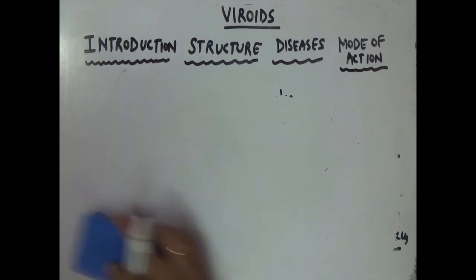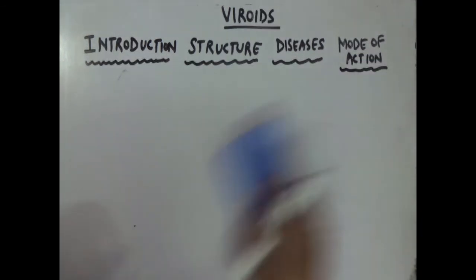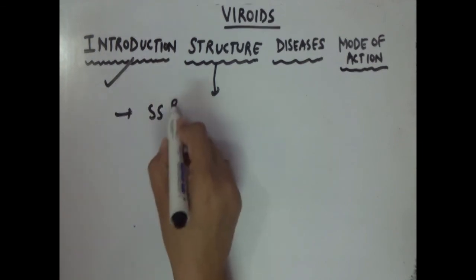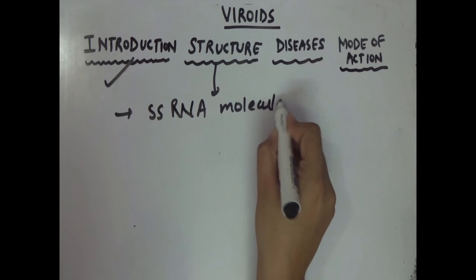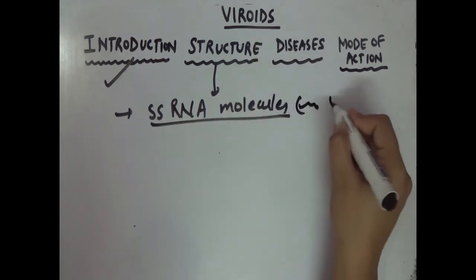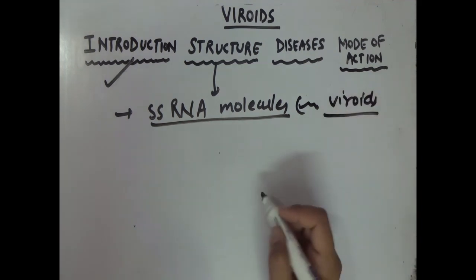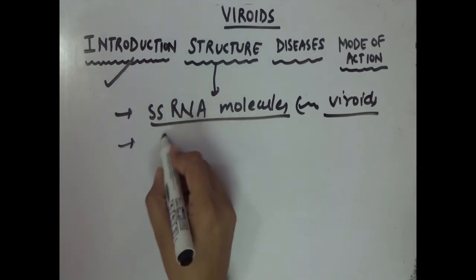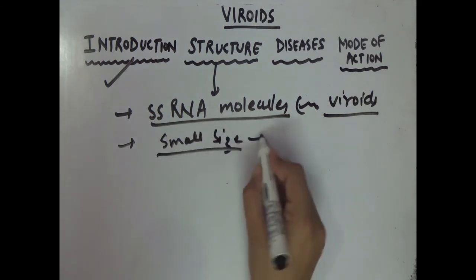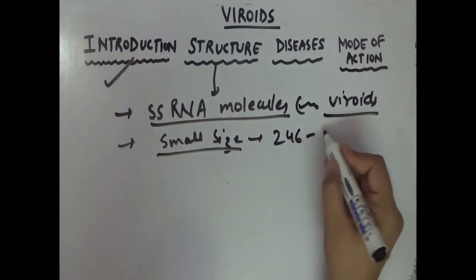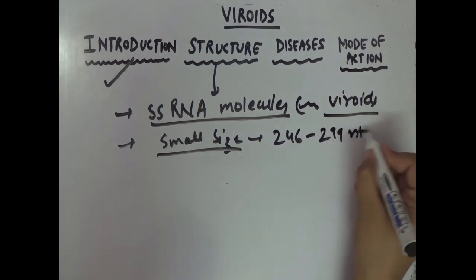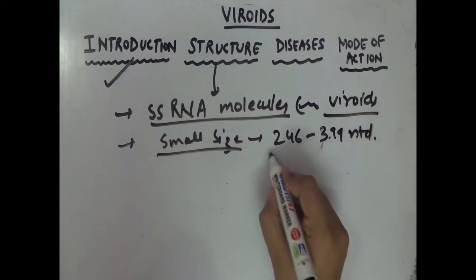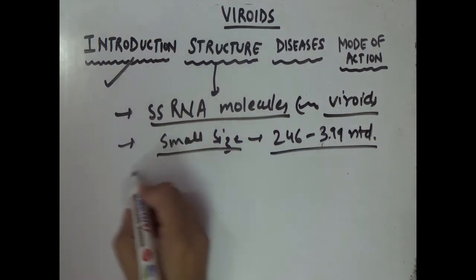Now let's talk about structure. Viroids are single-stranded RNA molecules — they don't have any protein, cell wall, or cell membrane; they are acellular. Regarding their structure, they are of very small size, and the size generally ranges between 246 to 399 nucleotides.